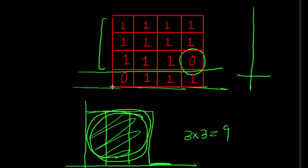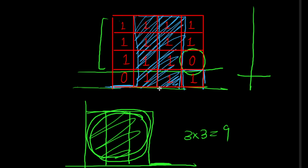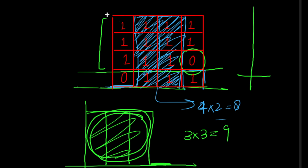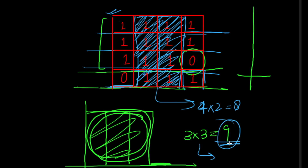For the fourth row as a base: the first column gives zero, the second gives four, the third gives four, and the last column gives one. The maximum area enclosed by this histogram is four cross two, which is eight. After considering all rows as base, we take the maximum of all areas, which is nine.